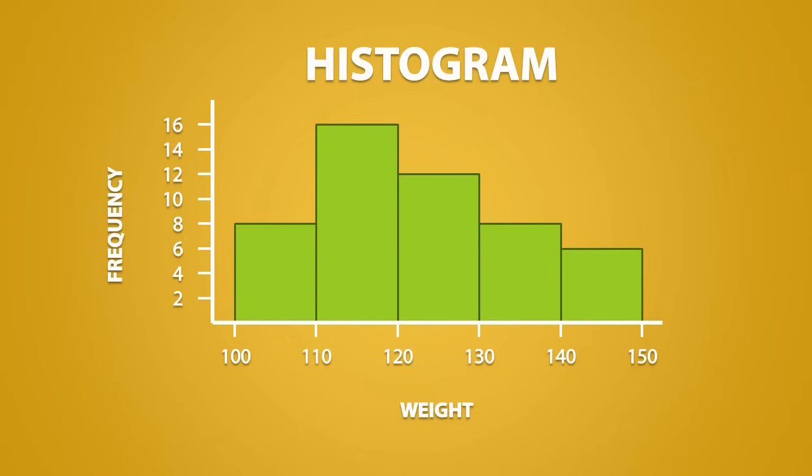To read a histogram, you first pick one of the intervals and determine its height. So for the interval between 100 and 110, we see that the bar has a height of 8. This means that, from the data we collected, 8 people weigh between 100 and 110 pounds. For the next interval, we see that the bar has a height of 16. So this means that 16 out of the total people I collected data from weigh between 110 and 120 pounds. The rest of the histogram can be read in a similar fashion.